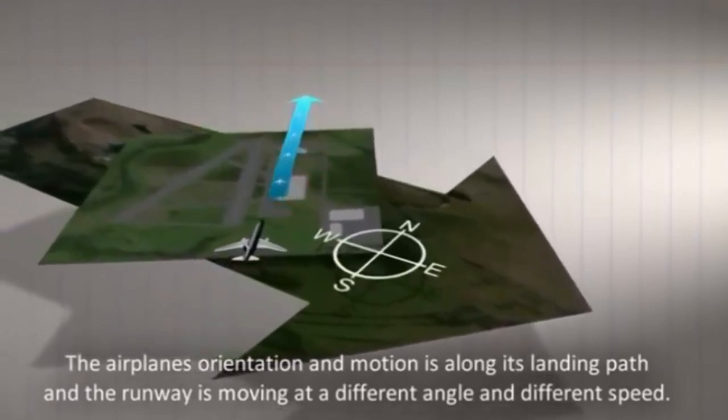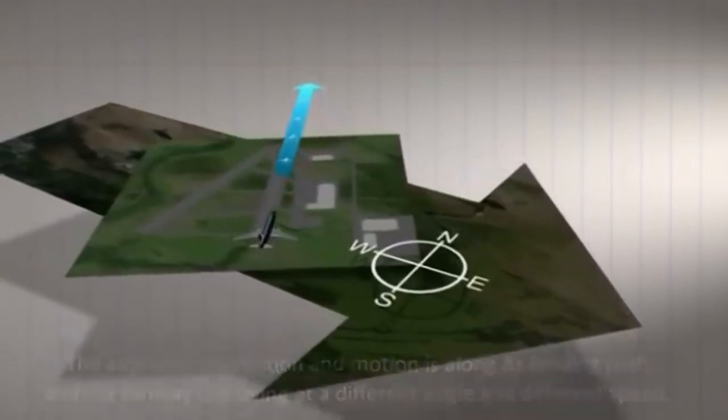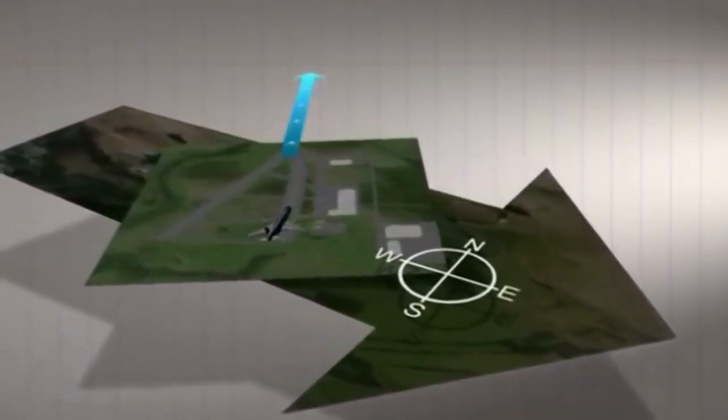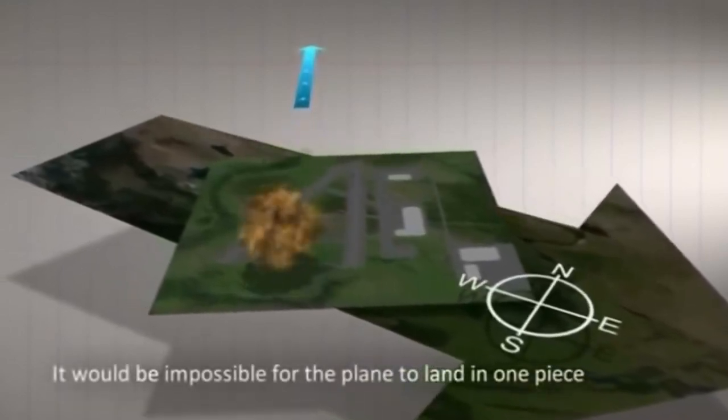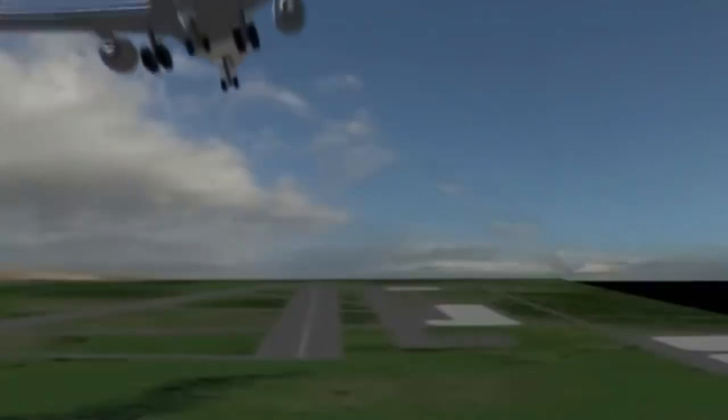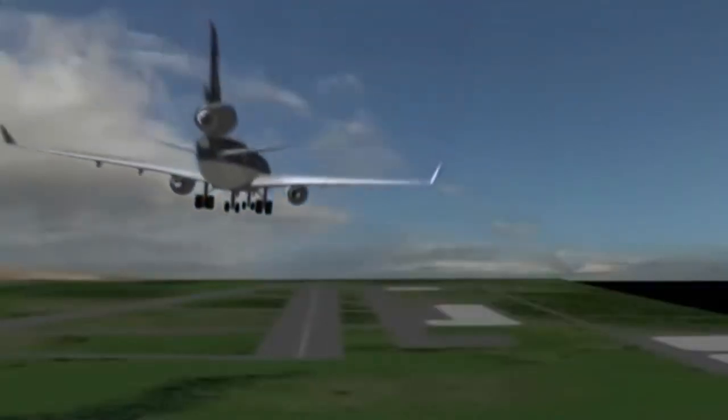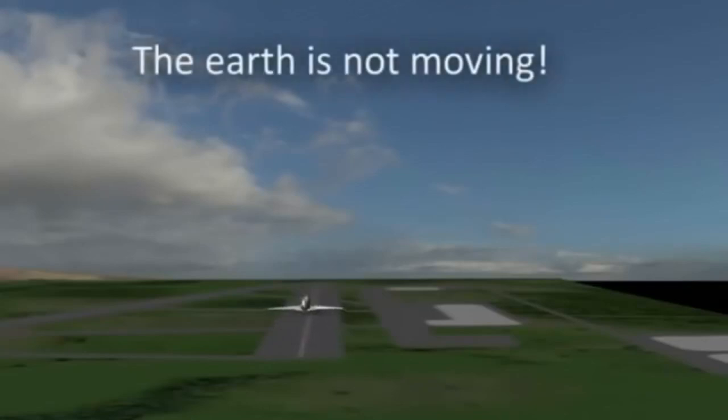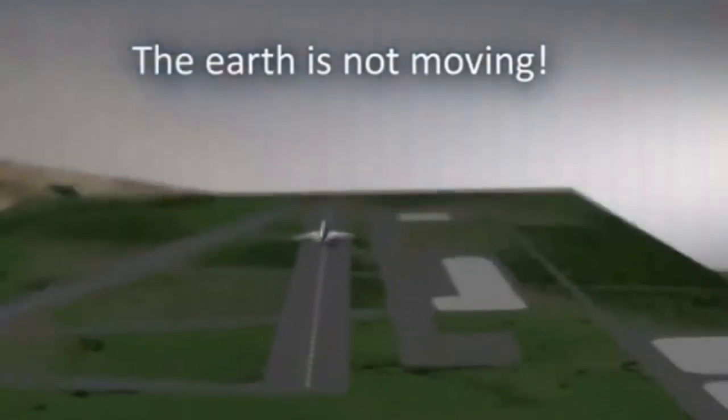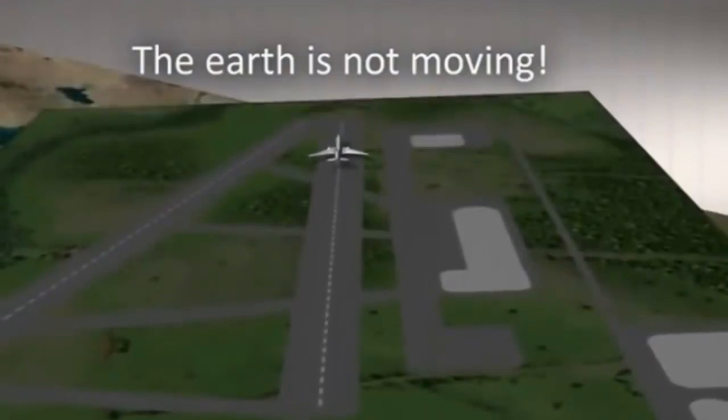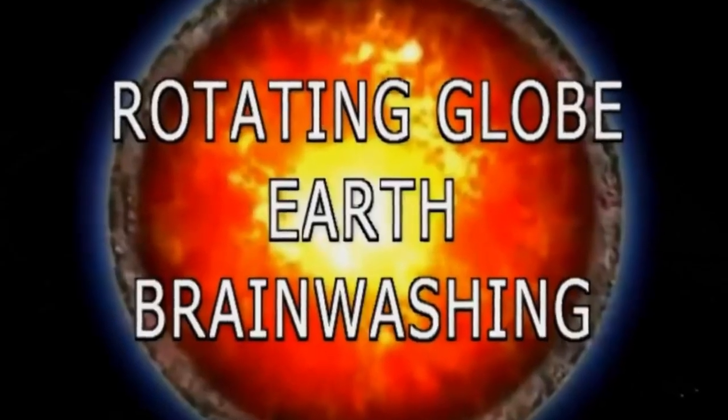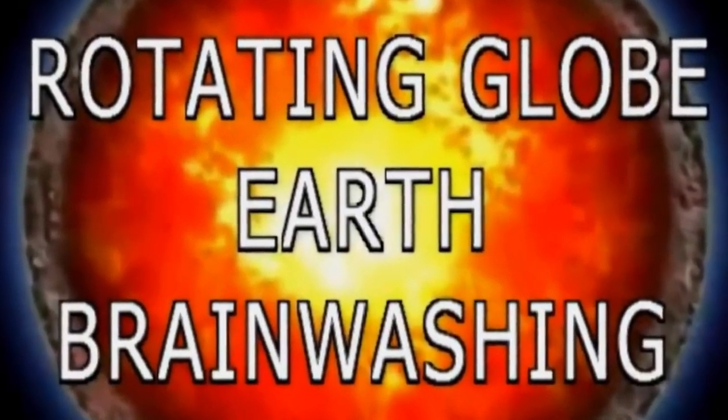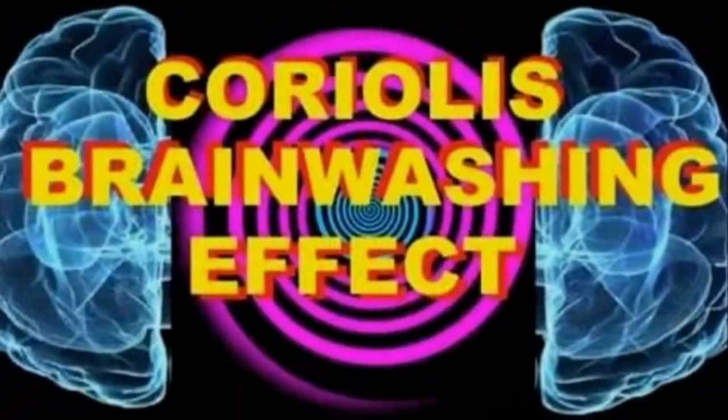The Coriolis Effect for spinning objects is real. Modern scientists must sell the myth that there is a Coriolis Effect manifested on the Earth in order to make the spinning Earth seem real. The fact that there is no Coriolis Effect on the Earth creates a real problem for scientists. Their solution to that little problem is to lie. They claim that there is a Coriolis Effect when there is not.